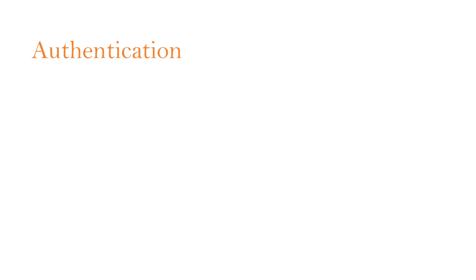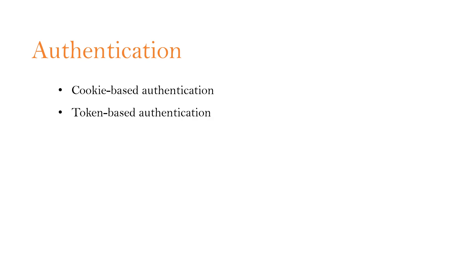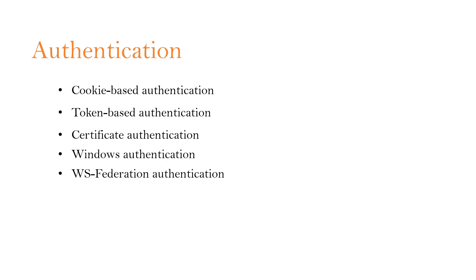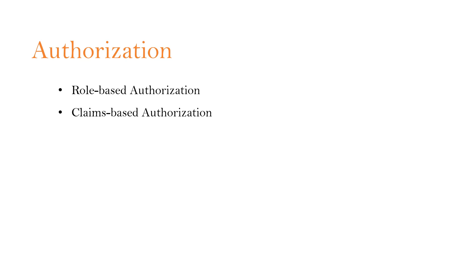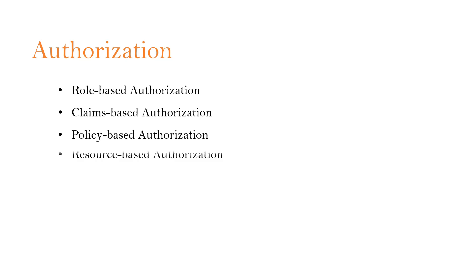ASP.NET Core supports various types of authentication, like cookie-based authentication, token-based authentication, certificate authentication, Windows authentication, WS Federation authentication, and multi-factor authentication. Similarly, ASP.NET Core supports various types of authorization techniques as well, like role-based authorization, claims-based authorization, policy-based authorization, resource-based authorization, and view-based authorization.